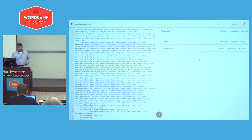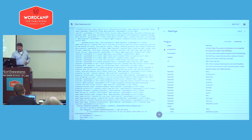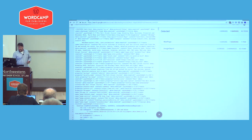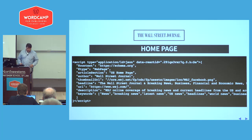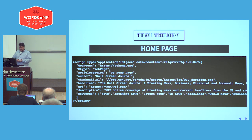This is the Wall Street Journal in the structured data testing tool. The homepage has 62 image objects, and they show you the output. Then there's the web page markup — they're defining, in the schema world, basically all those things we saw in the meta world. They have one warning: Google says the property 'articleSection' is not recognized for an object type of web page. They can either fix that or ignore it. Their homepage schema is pretty simple — it's a web page with author as the Wall Street Journal, a thumbnail URL, headline, URL, description, and keywords.